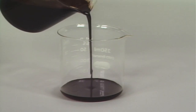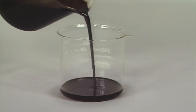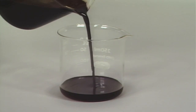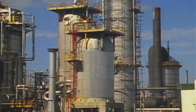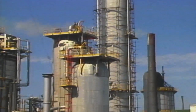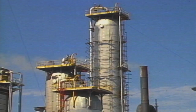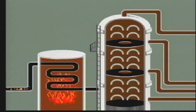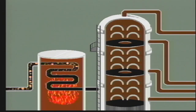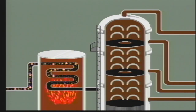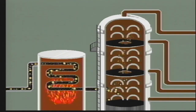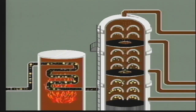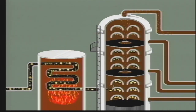Crude oil is a mixture of different size molecules called hydrocarbons. The fractionating column sorts these hydrocarbons into different parts or fractions. First, the oil is heated until it boils and is changed into a gaseous state. Then, as a gas, it rises up the fractionating column.